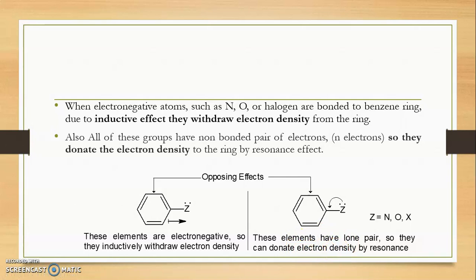If these two effects happen simultaneously, they may cancel each other out, but in practice this does not happen. The net effect depends upon which atom is directly bonded to the benzene ring — whether nitrogen, oxygen, or halogen.